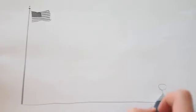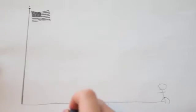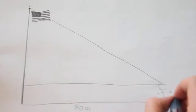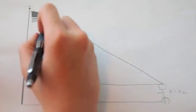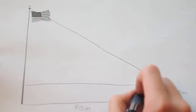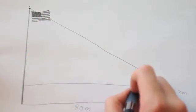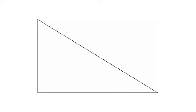To find out how tall the flagpole is, the first thing we did was measure the distance between the flagpole and the person measuring the angle, and in this case we got 30 meters. The second thing we did was measure the height of the person from eye level, and we got 1.7 meters. The last thing we did was measure the angle from eye level to the top of the flagpole, and we got 15 degrees.